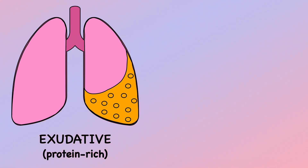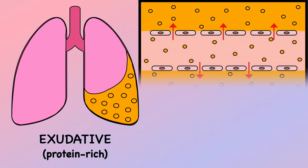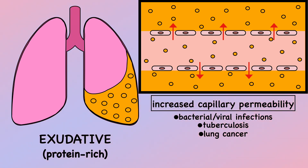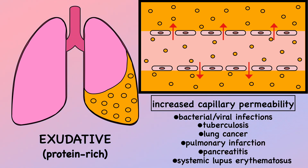In exudative pleural effusion, the physiopathological mechanism is increased capillary permeability due to inflammation. Some causes may be bacterial or viral infections, tuberculosis, lung cancer, pulmonary infarction, pancreatitis, and systemic lupus erythematosus.